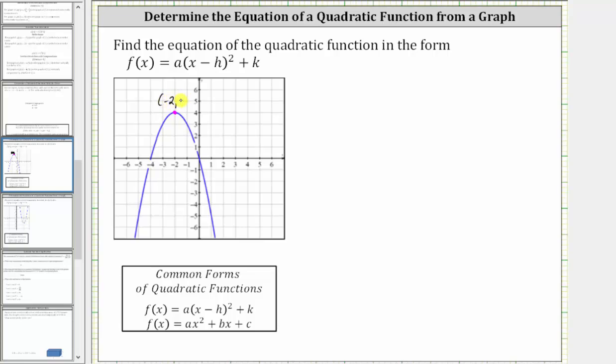This point here, where the ordered pair is negative two comma four. So because the vertex is (-2, 4), we know that h equals negative two and k equals positive four. Performing the substitution gives us f(x) equals a times the quantity x minus negative two squared, plus four. And x minus negative two simplifies to x plus two, so we have f(x) = a(x + 2)² + 4.